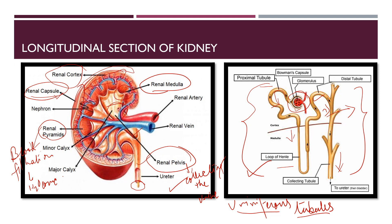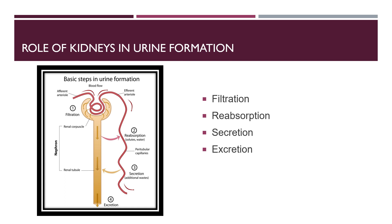Inside the Bowman's capsule we can see the glomerulus. The Bowman's capsule and glomerulus together form the Malpighian body. So the nephron structure consists of: the Malpighian body (Bowman's capsule + glomerulus), proximal convoluted tubule, loop of Henle, distal convoluted tubule, and collecting tubule, which moves urine to the ureter and then to the urinary bladder.